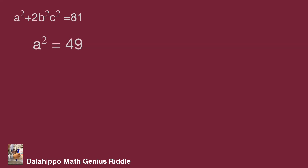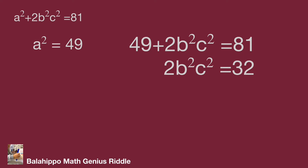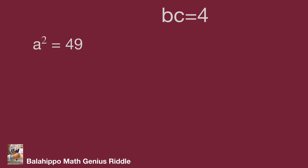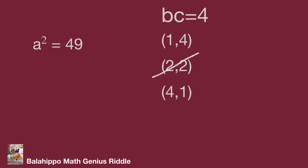If a squared equals 49, substituting gives 2 times b squared c squared equal to 32, so b squared c squared equals 16. Taking the square root of both sides, we get b times c equal to 4. The bc value groups could be 1 times 4, 2 times 2, or 4 times 1. Since a not equal to b not equal to c, we eliminate 2 times 2. So with a equal to 7, the valid (a, b, c) groups are 7, 1, 4 and 7, 4, 1.